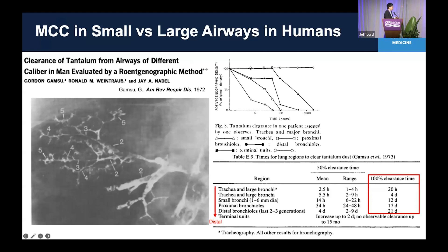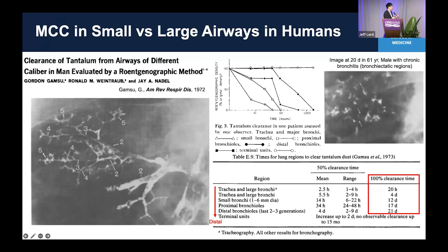In the trachea, technetium — a chemical tracer — is cleared at around 20 hours, but in the distal airway it takes even about 20 days to clear. And if there is a disease like bronchitis, the technetium remains even after 20 days, showing that disease affects small airway mucociliary clearance significantly.